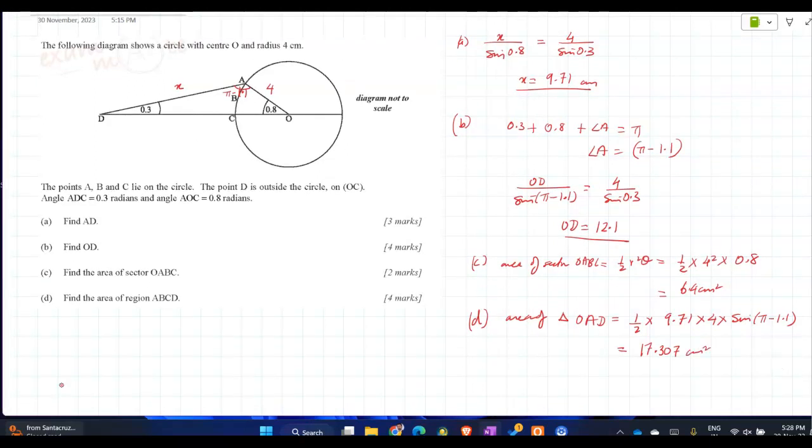So therefore area of region A, B, C, D will be 17.307 minus 6.4. So you do minus 6.4. That makes it 10.9 centimeter square. That's your answer. Thank you.